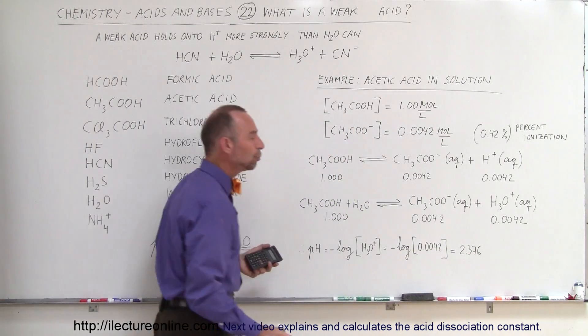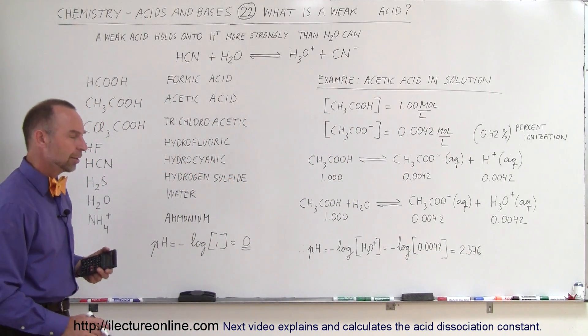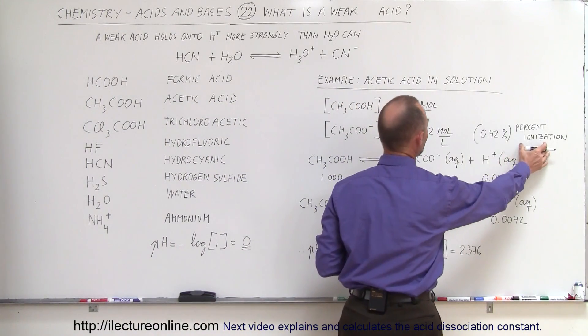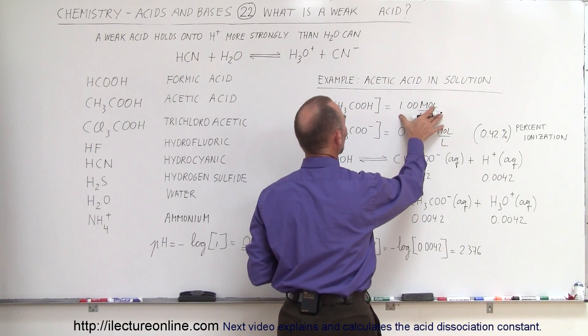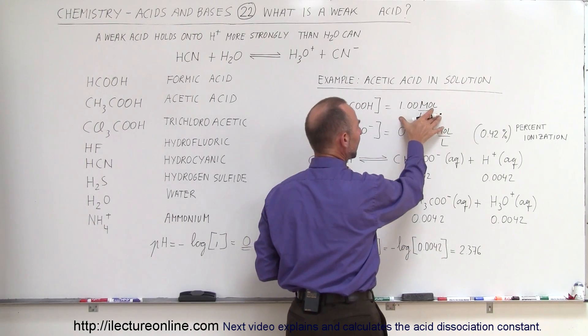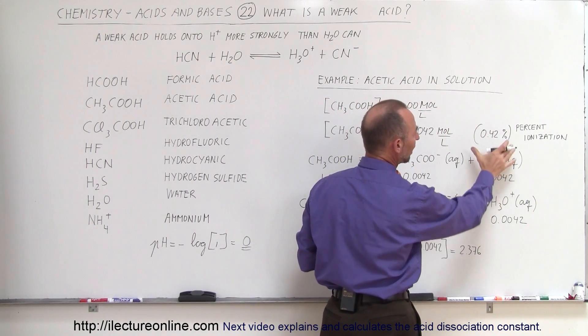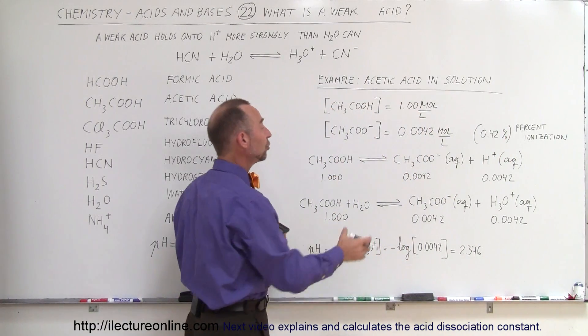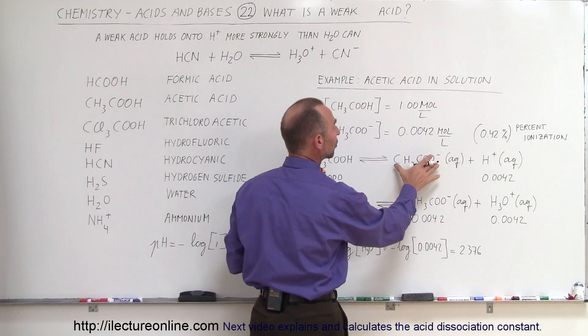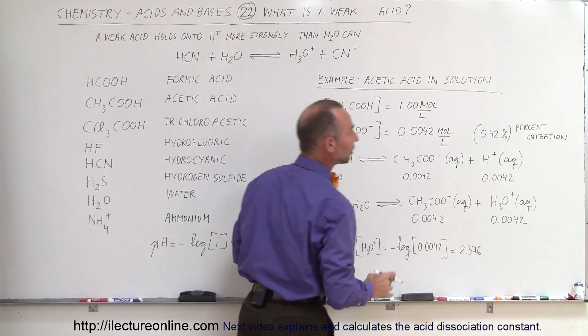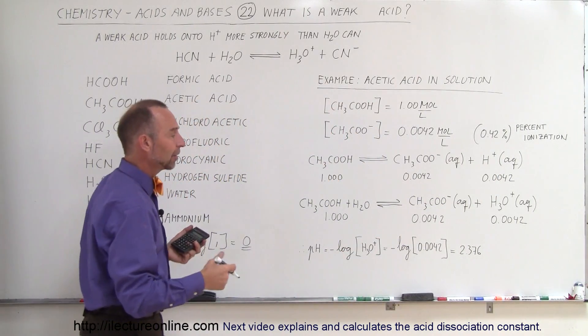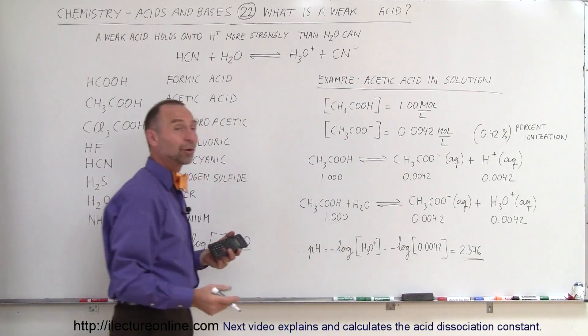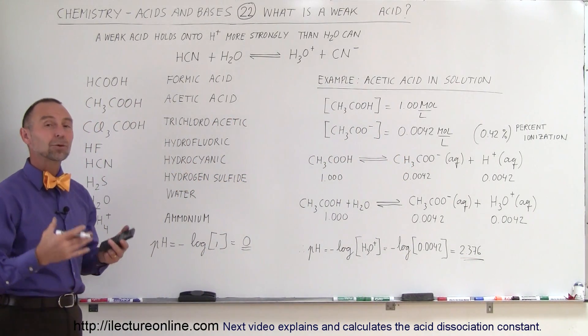Another way of looking at that is the percent ionization. So we can see that if we put a 1 molar solution of acetic acid in a container, only 0.42% of that will dissociate into the acetic ion and the hydrogen ion. And so you can see that because of that, the pH is much greater, and therefore we consider the acid to be a lot weaker.